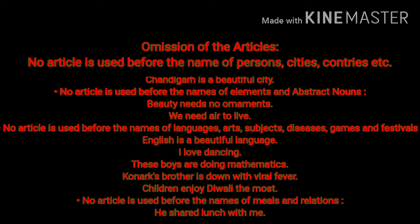Next is omission of articles — where we do not use articles. No article is used before the names of persons, cities, countries, or towns. For example: 'Chandigarh is a beautiful city' — no article before Chandigarh. No article is used before the names of elements and abstract nouns — for example: 'Beauty needs no ornaments' and 'We need air to live' — here 'air' is an abstract noun.